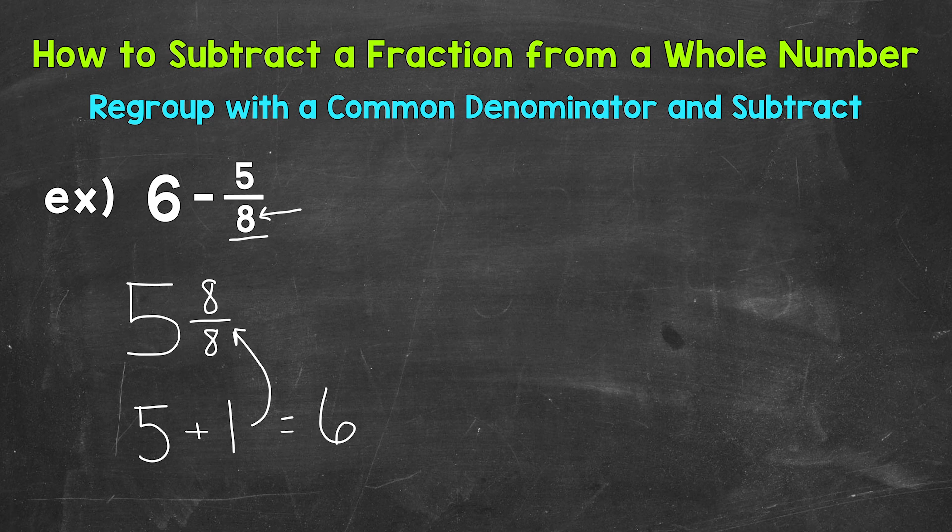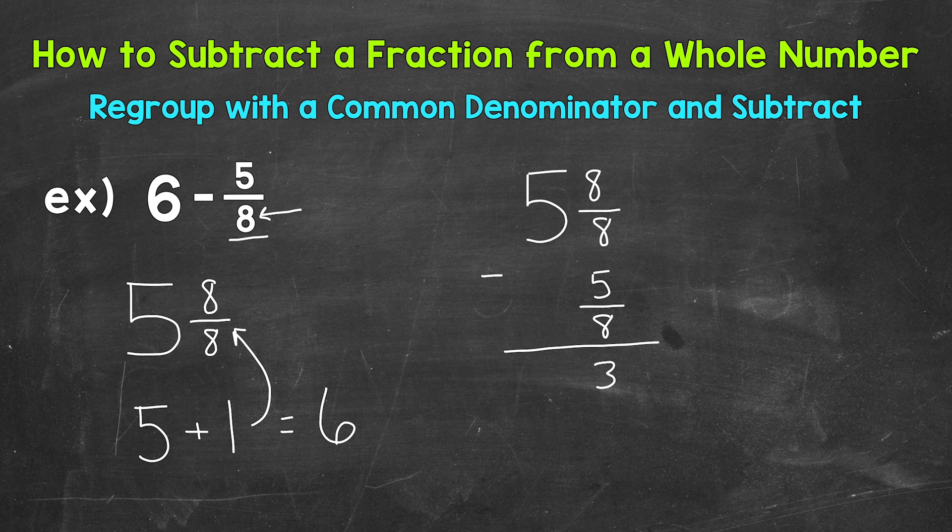Now we can subtract. So I'm going to come to the side here and write our mixed number. So 5 and 8 eighths, and again, that's equivalent to 6. And we are subtracting 5 eighths. So I can line up my fractions and now subtract. So I can do 8 eighths minus 5 eighths, which gives us 3 eighths.